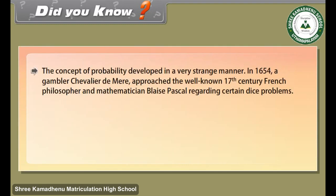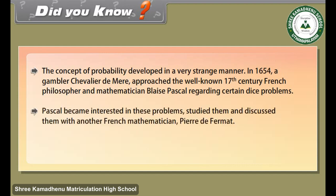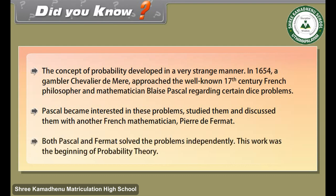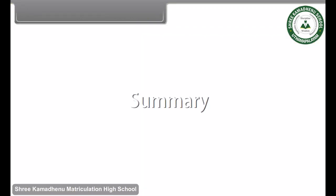Did you know? The concept of probability developed in a very strange manner. In 1654, a gambler, Chevalier de Mer, approached the well-known 17th century French philosopher and mathematician Blaise Pascal regarding certain dice problems. Pascal became interested in these problems, studied them, and discussed them with another French mathematician, Pierre de Fermat. Both Pascal and Fermat solved the problems independently. This work was the beginning of probability theory.